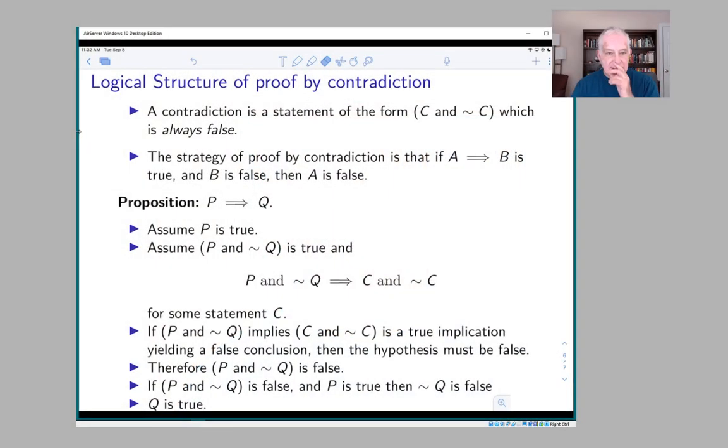Okay everybody, I'm going to do a couple more examples, but at least one more example of a proof by contradiction. But before I do that, I wanted to talk a little bit about the logical structure of a proof by contradiction because maybe that'll help clarify what's going on.